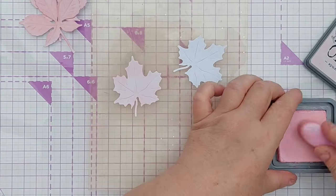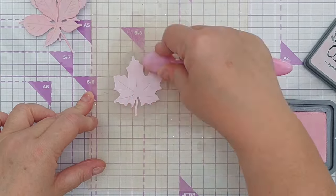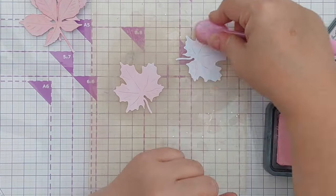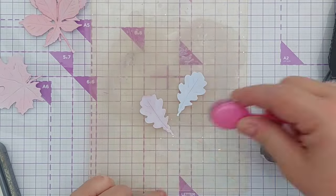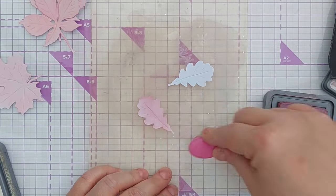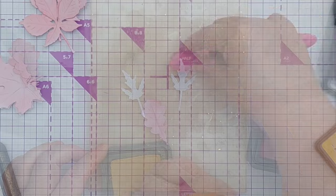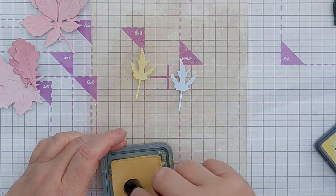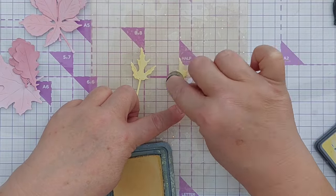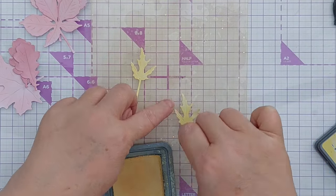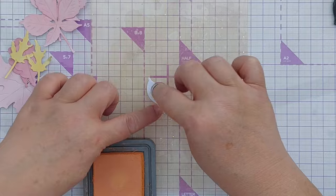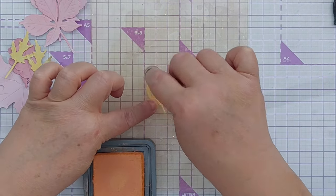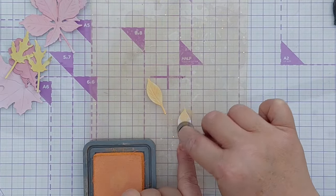So for my next color I'm using spun sugar on the second largest leaves. And now for Victorian velvet. These leaves I'm coloring with the scattered straw, and because they're so small and quite delicate I'm using the sponge dauber to add the color. And these last leaves I'm going to do in dried marigold. These are a bit more autumnal.